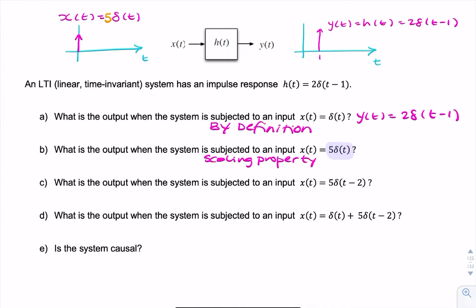Why are we allowed to use the scaling property of the system? Because we're told the system is linear. And the linear system is additive and it is homogeneous. And homogeneous means it accepts scaling.